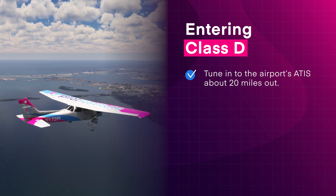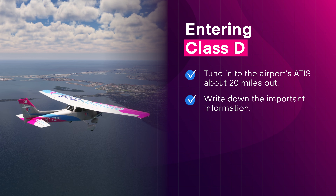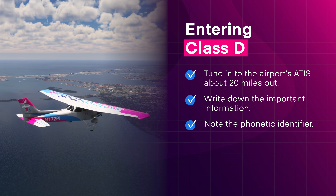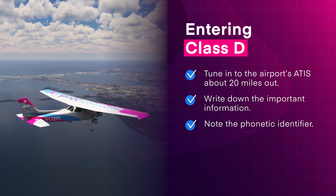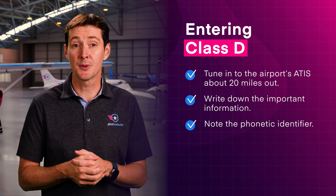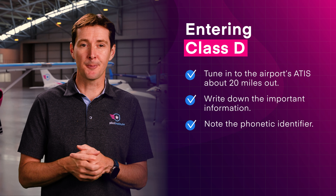Once airborne, tune in to the airport ATIS about 20 miles out from your destination. Write down important information like weather, altimeter setting, and active runways. Note the phonetic identifier — for example, 'information alpha.' You'll need to report the identifier to the tower so they know that you have the latest information.